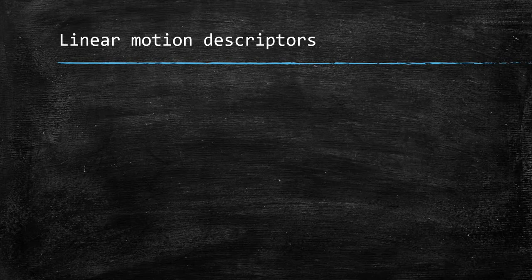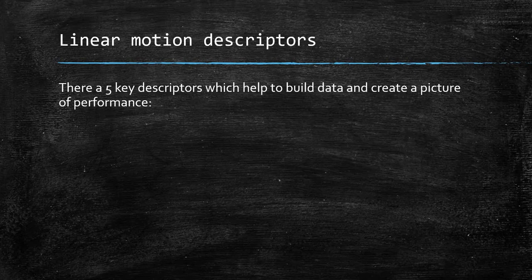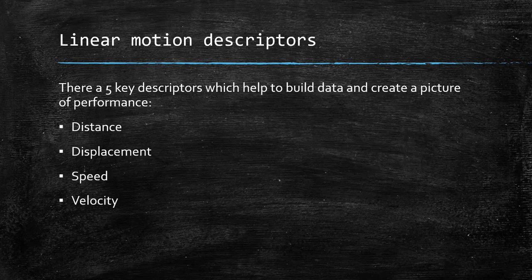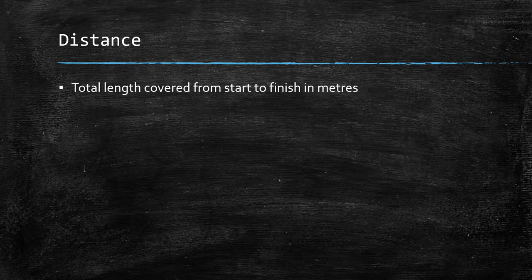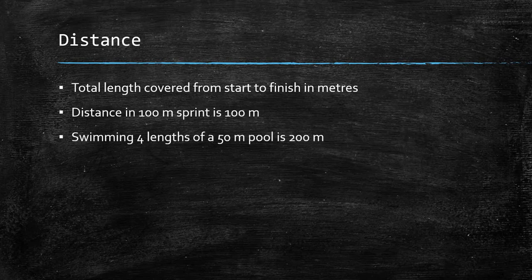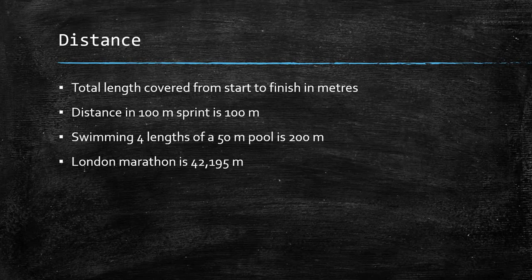Linear motion descriptors. We have looked at these previously but we're going to look in a little bit more detail. There are five key descriptors that help us build data and create a picture of different performances: distance, displacement, speed, velocity, and acceleration or deceleration. Distance is the total length covered from start to finish in metres. The distance in a 100 metre sprint is 100 metres. Four lengths of a 50 metre pool would be a distance of 200 metres. And the London Marathon is 42,195 metres.